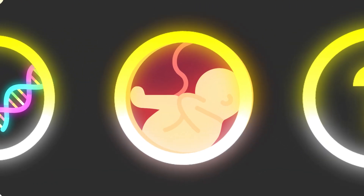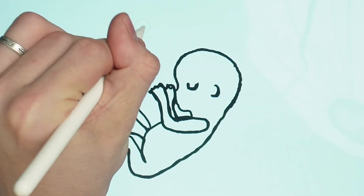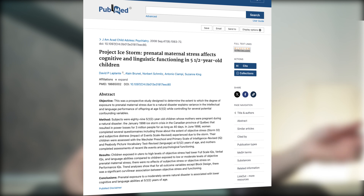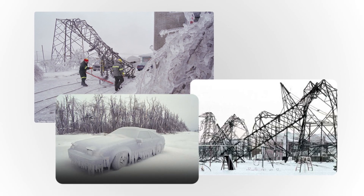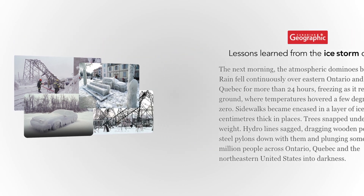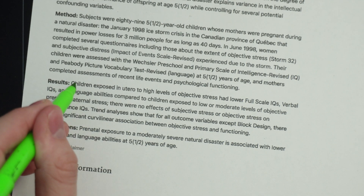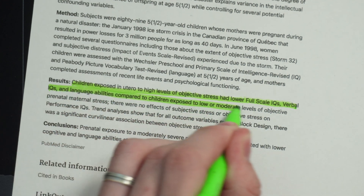The second reason is because of the prenatal environment — the environment of the fetus in the womb. When you're in the womb, you're at the mercy of everything that your mother experiences. It has been shown many times that if a mother experiences a lot of stress during her pregnancy, it will cause problems to the child's development. One study examined the effect of prenatal stress on child development by testing children who were exposed to their mother's stress during the 1998 Quebec ice storm, which resulted in power losses for 3 million people for as long as 40 days. The study concluded that children exposed to high levels of stress during the storm had lower full-scale IQs, verbal IQs, and language abilities compared to children exposed to low or moderate levels of prenatal maternal stress.